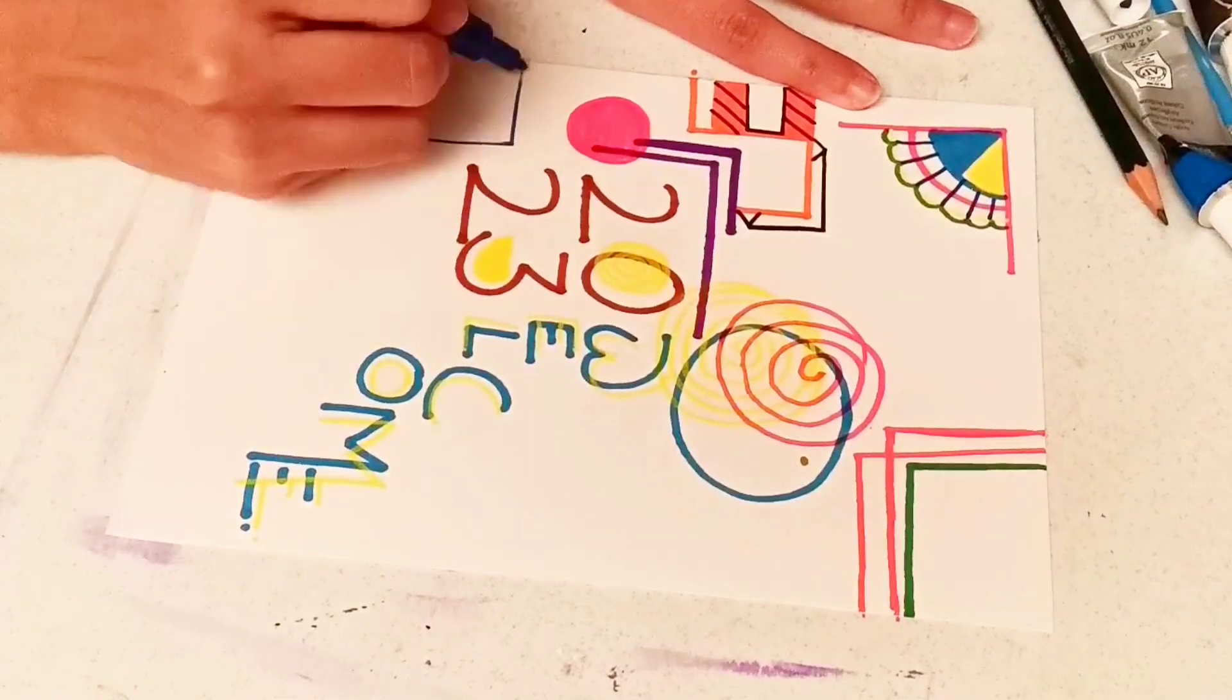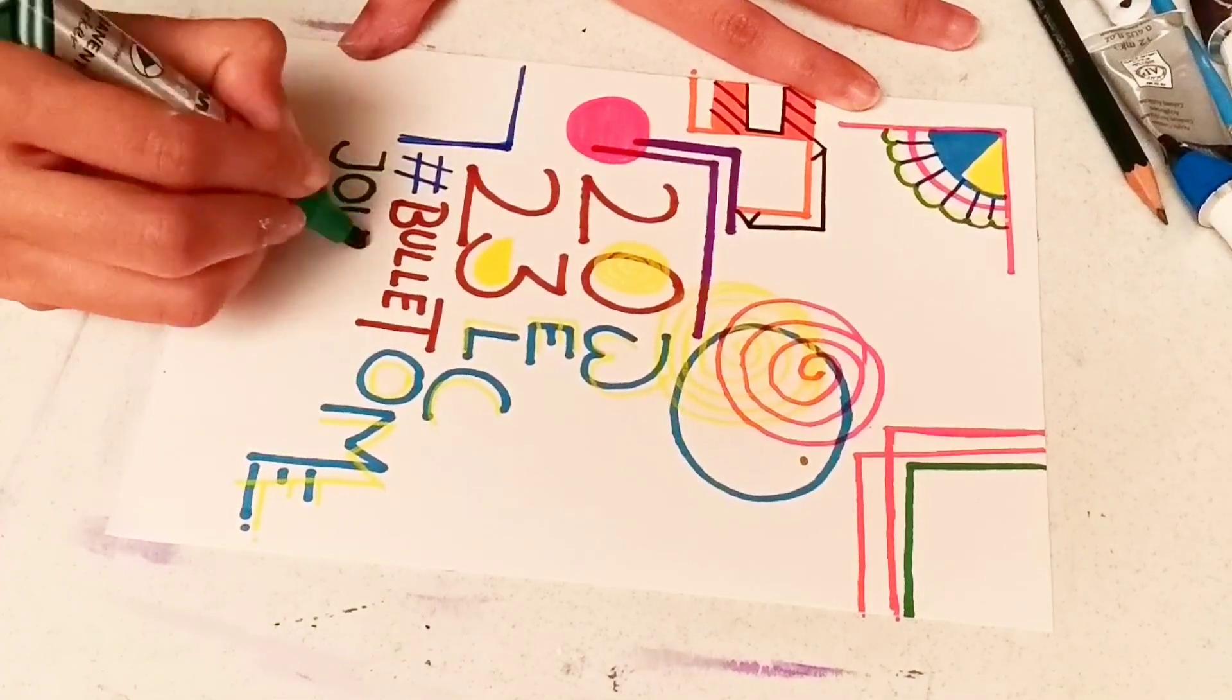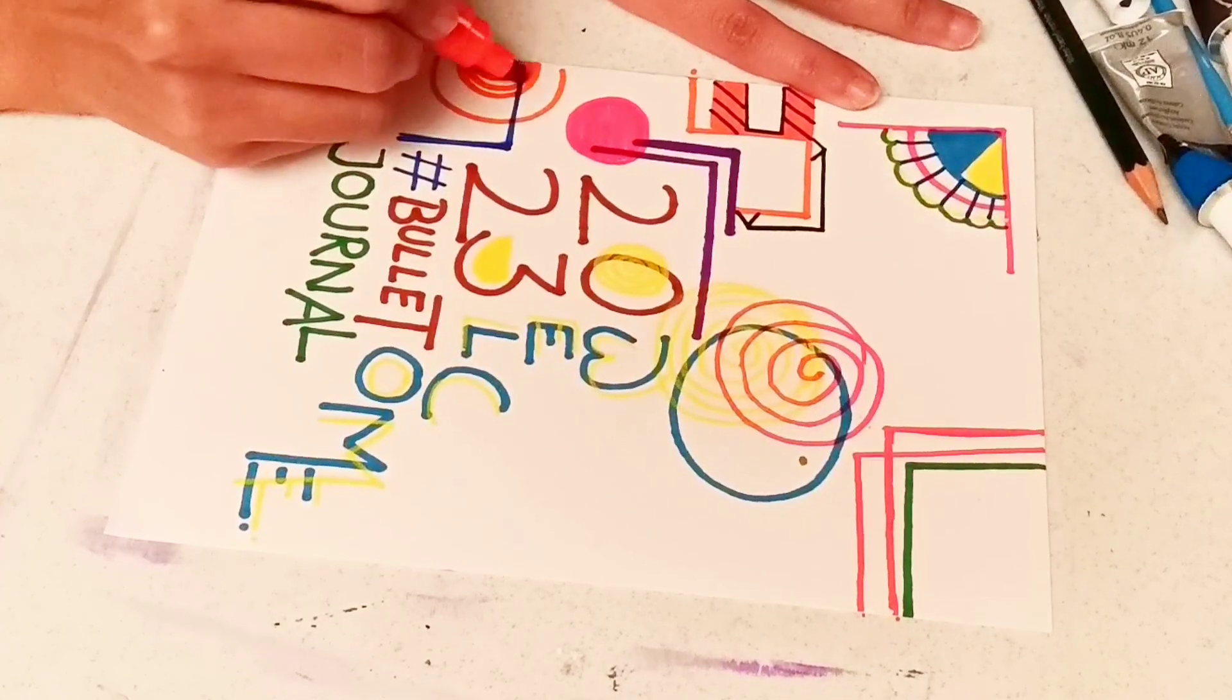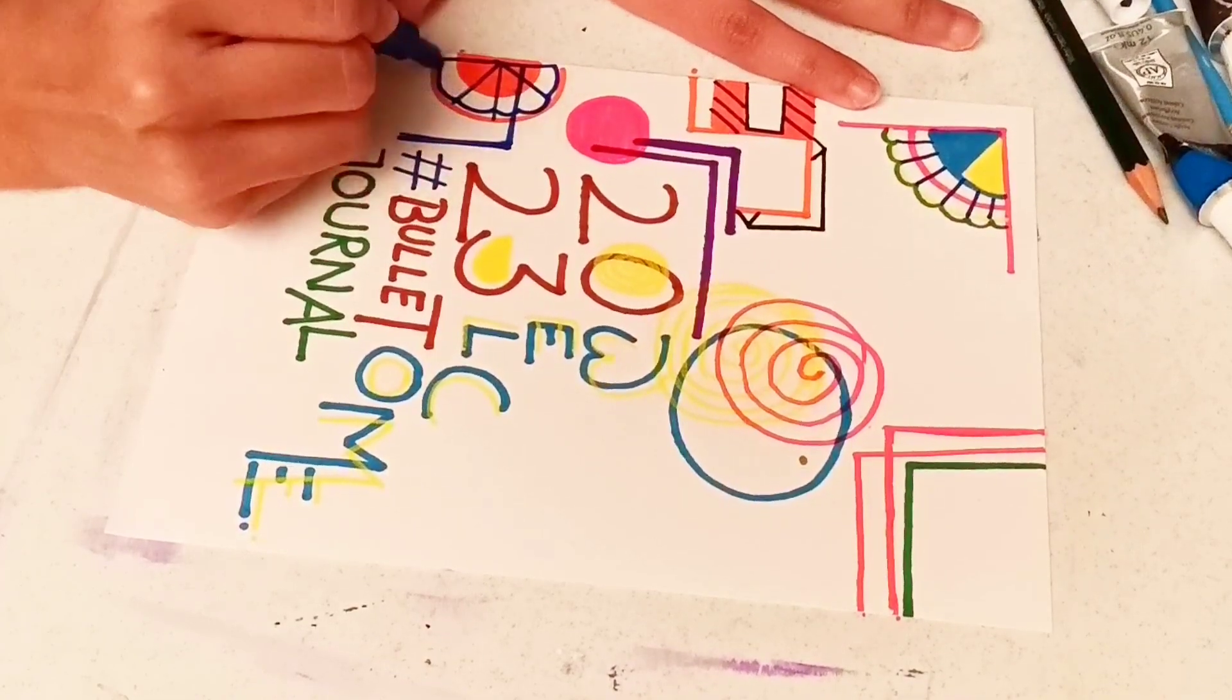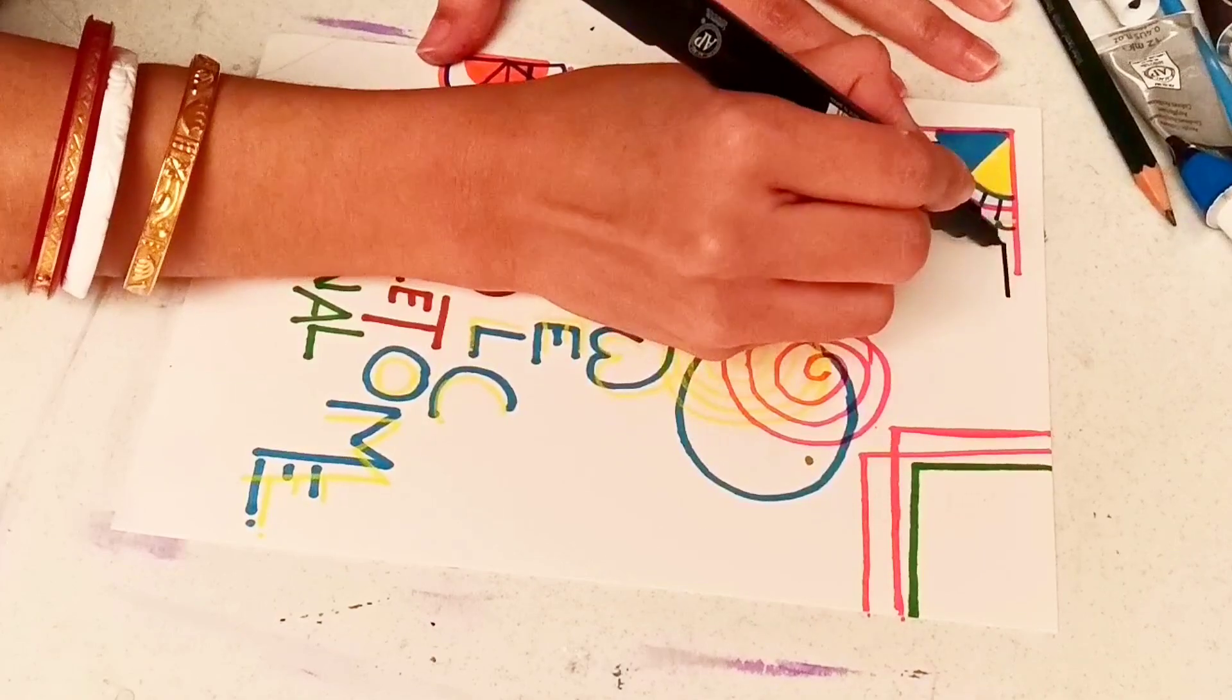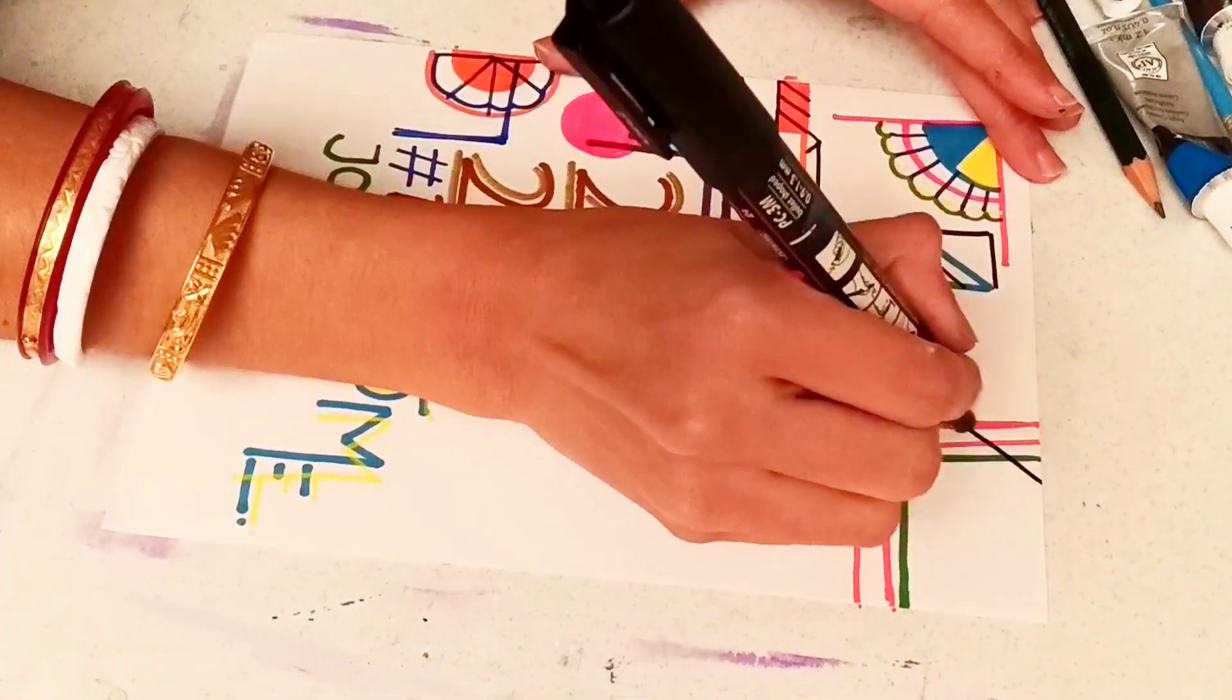When you're using various types of markers one after another on white paper, just remember that the color combination should look nice. Are you enjoying these nice random marker strokes on the paper? I'm literally enjoying this.